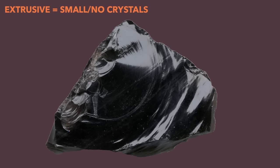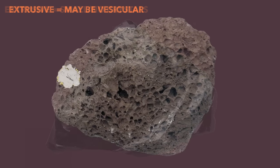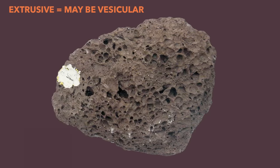What about this obsidian? This is interesting — it cooled so quickly, in a matter of seconds, that no crystals were able to form at all, and so you have this kind of glassy appearance. Finally, if it cools quickly enough, you might get air bubbles trapped in the lava that become part of the rock in the form of vesicles, or vesicular texture. You would look for air bubbles.